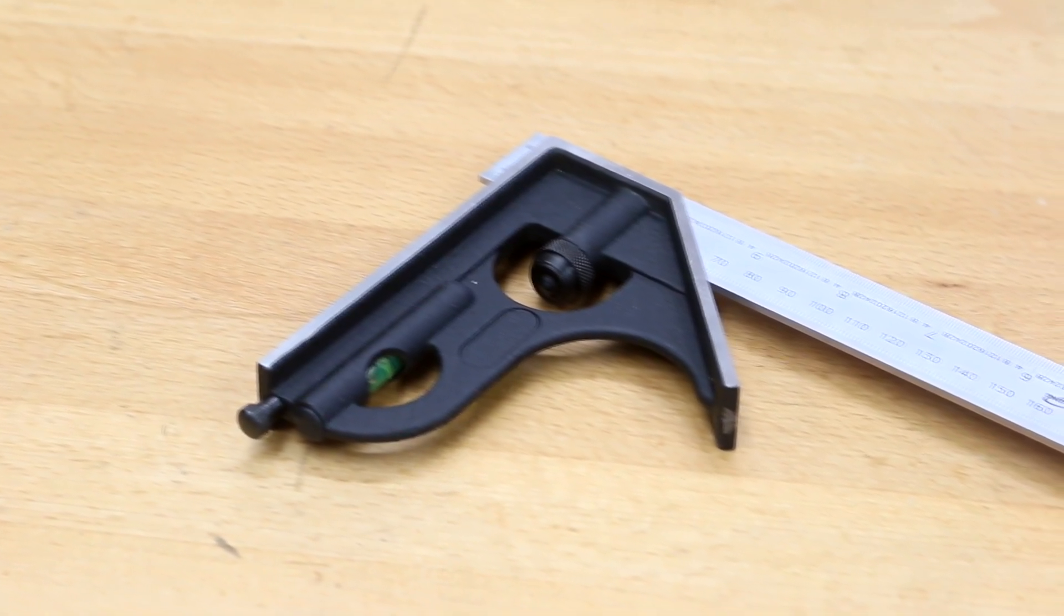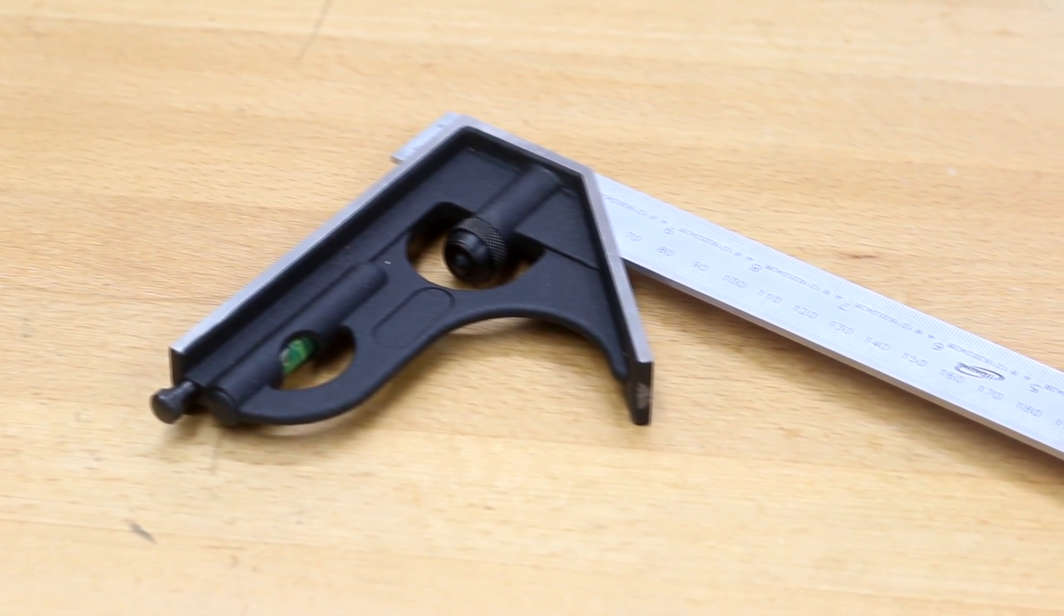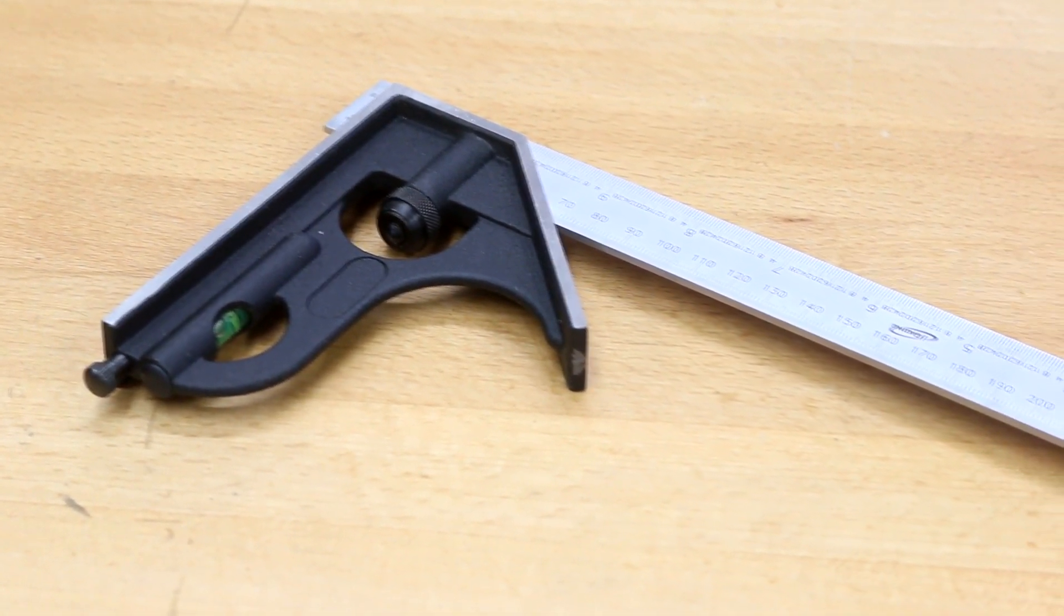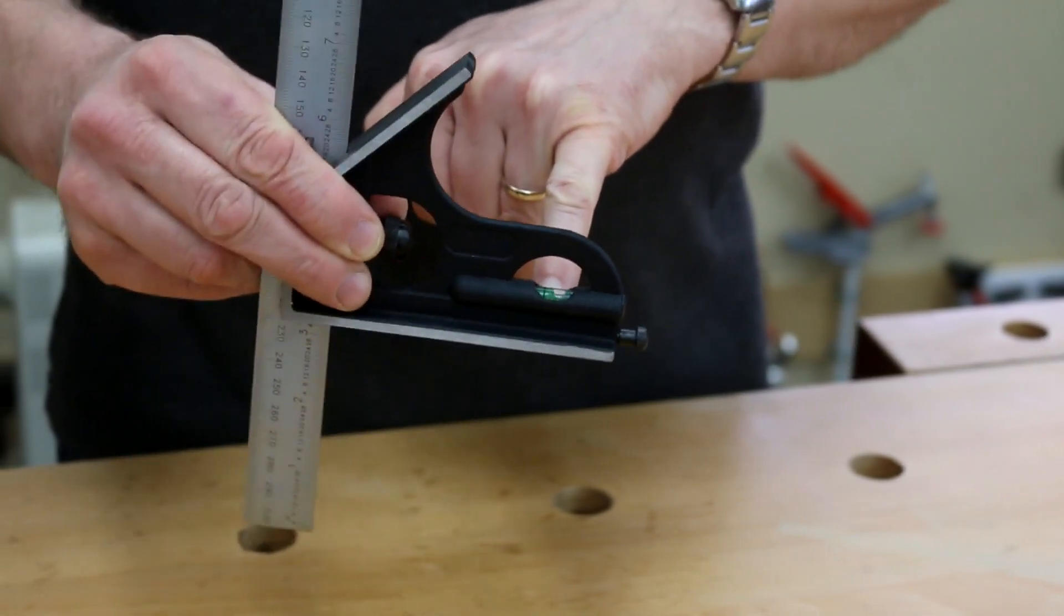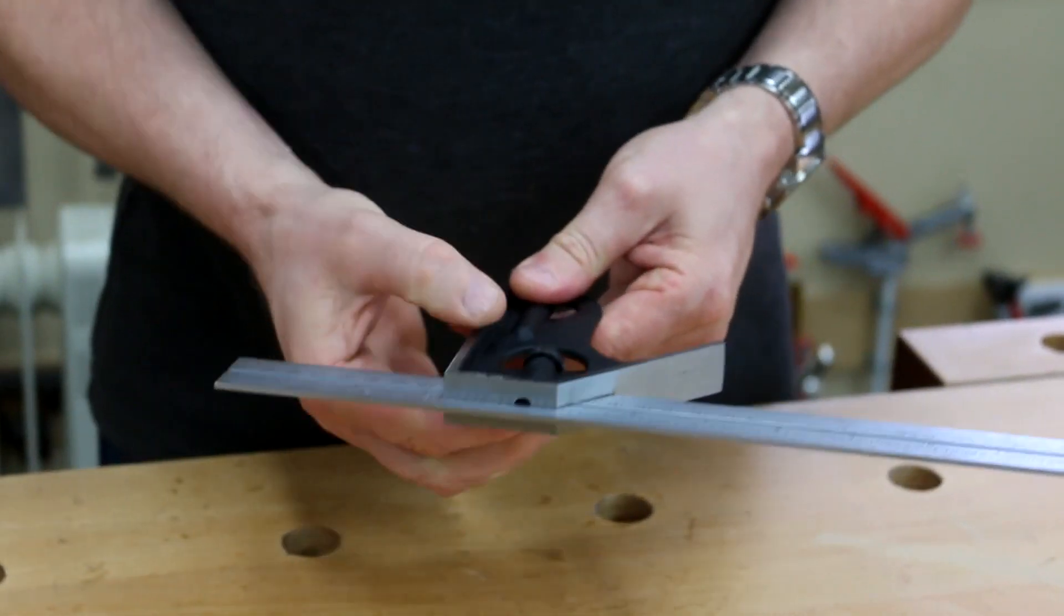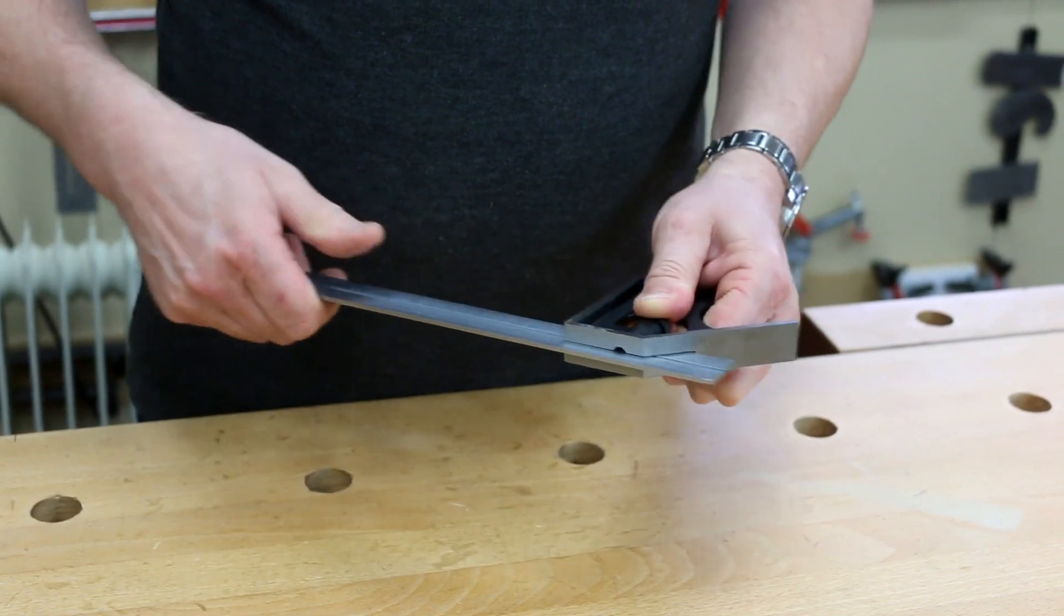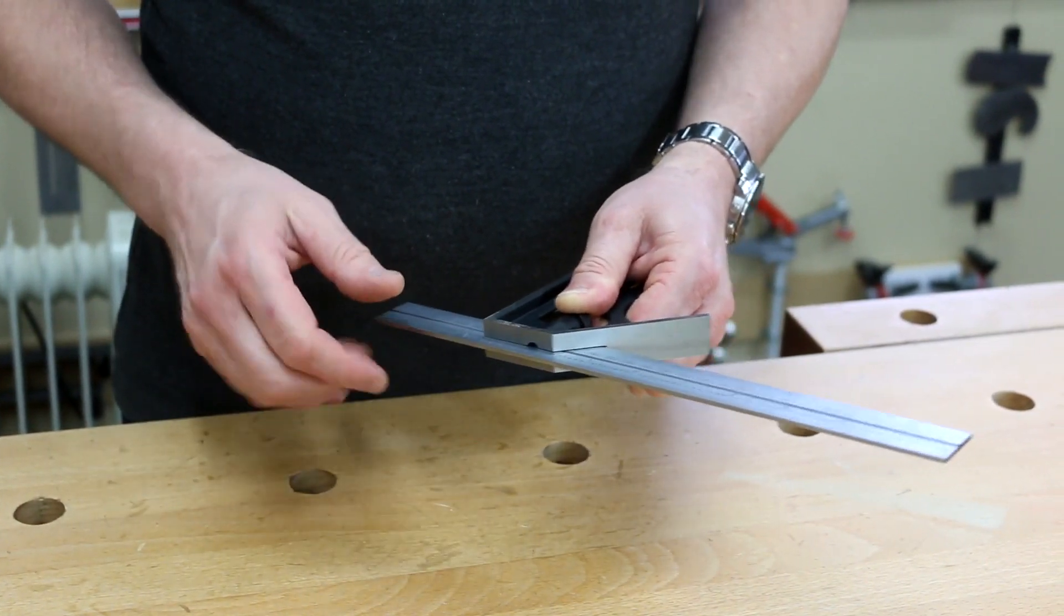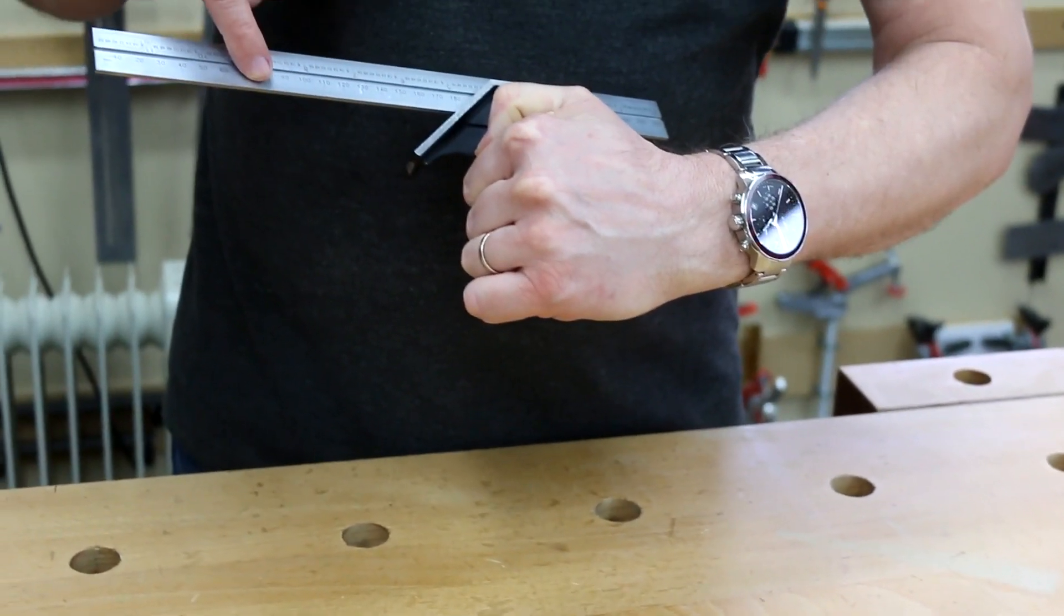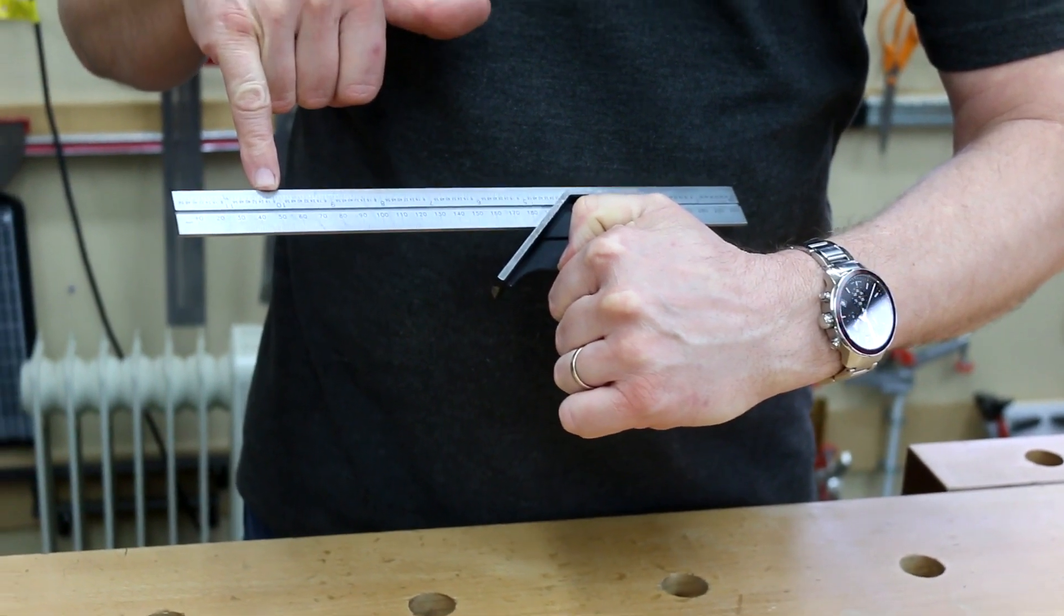The main body of the square is cast steel. Into this we have a level set into it so we can level up our work. A nice knurl screw fitting—if we release this we can slide the rule in and out. We've got metric on one side, imperial on the other.